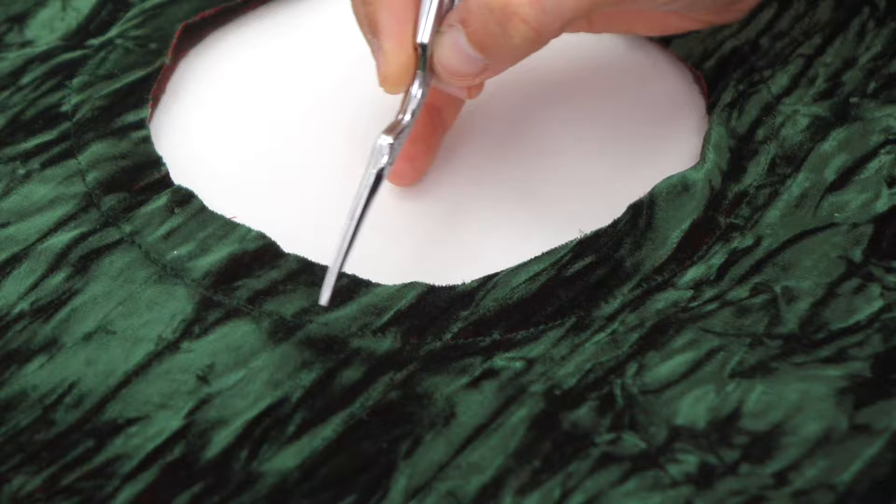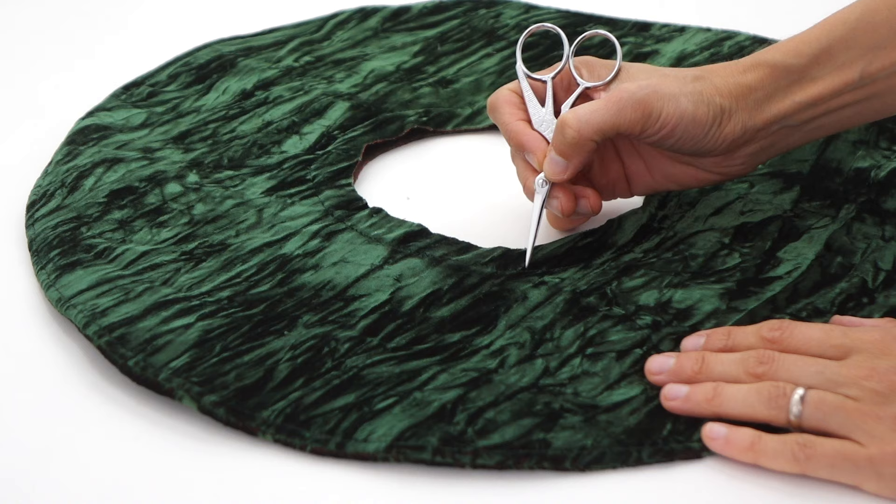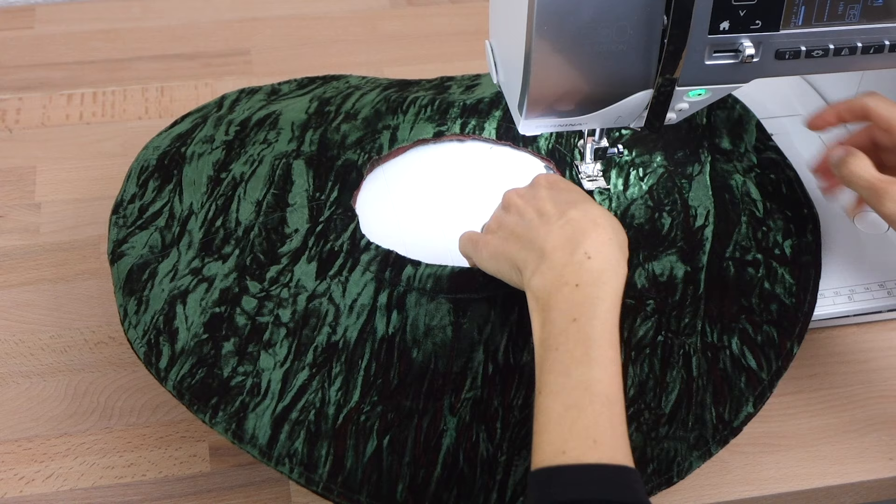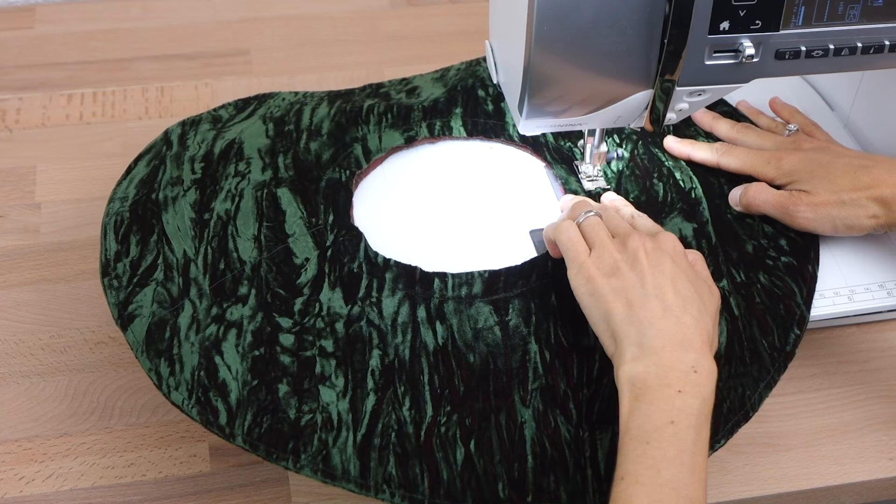Now, using as a guide the seam we made before on the bottom side of the brim, we are going to stitch together the top and the bottom with the machine. Having both layers attached together around the inside will help us attach the top of the hat to the brim later on.